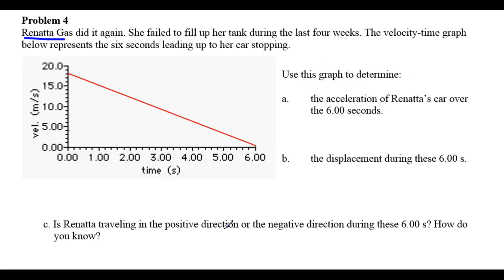Use the graph to determine first the acceleration of Renata's car over the six seconds. So look at this. We've got six seconds. We're considering the entire length, and we have to find her acceleration during that segment. Acceleration is equal to the slope of a velocity-time graph. This is a velocity-time graph. It's velocity against time. So slope equals acceleration for all such graphs.